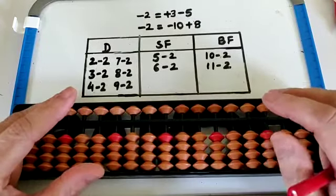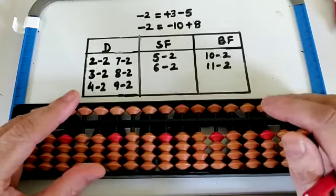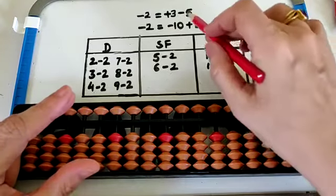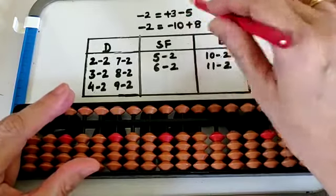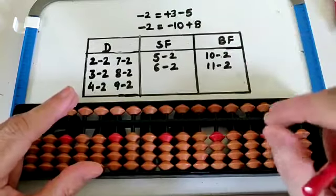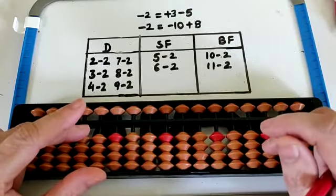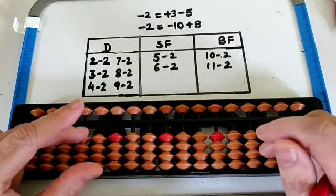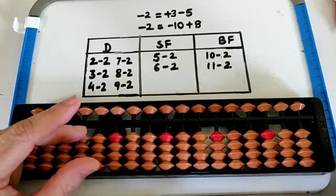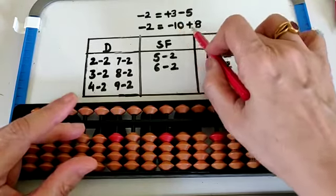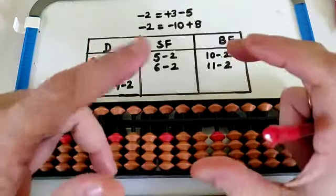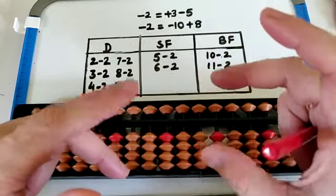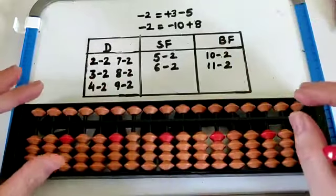You've already studied minus 2 small friend. Small friend ka formula kya hota hai? Plus 3, minus 5 — that is 3 up, 5 up. Now let's check the formula of minus 2 big friend. 2 ka big friend kaun hota hai? 8. So minus 2 big friend ka formula kya ho jayega? Minus 10 plus 8. So minus 10 with the left hand index and plus 8 with the pinch — minus 10 plus 8.